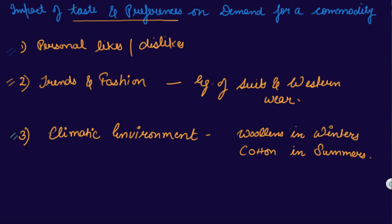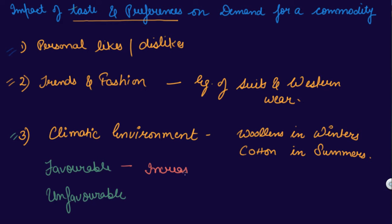Now, how does this affect your commodity? There are two types of taste and preferences: favourable and unfavourable. Your favourable taste and preferences will increase the quantity demanded of a commodity, because you are in favour of it and will demand more. Unfavourable taste and preferences means a decrease in the quantity demanded of a commodity.